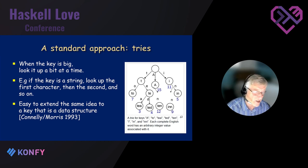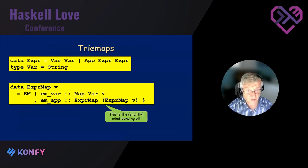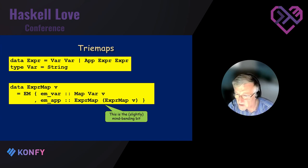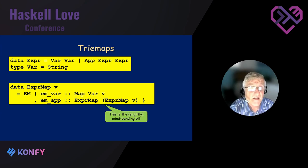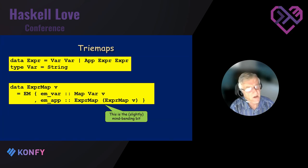This works well for strings, and it's been well known how to extend the same idea to a key that is a data structure — this goes back to at least 1993 with Lockwood Morris. We can adapt this idea to data structures straightforwardly. So if we have a data type Expr with constructors Var and App, the data structure we'll represent these tries in will be an ExprMap with values of type v.